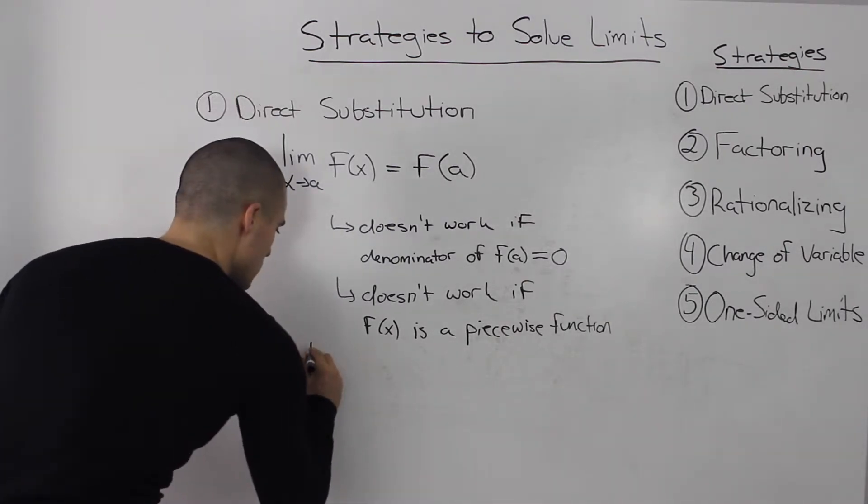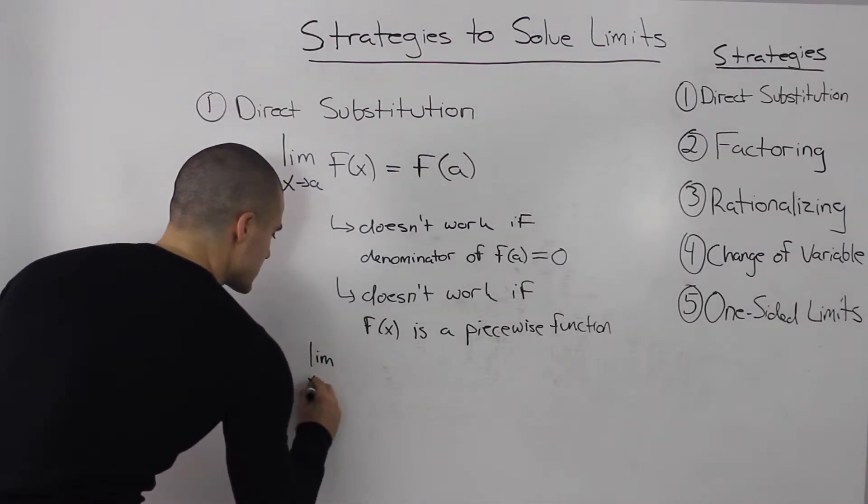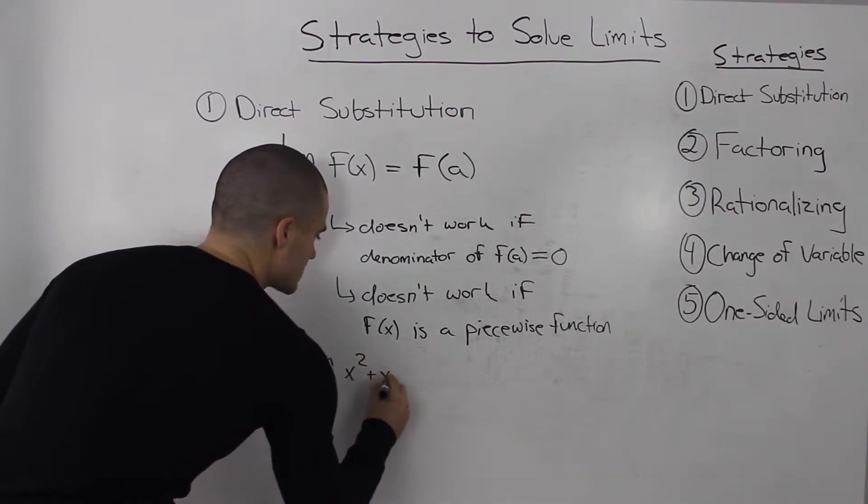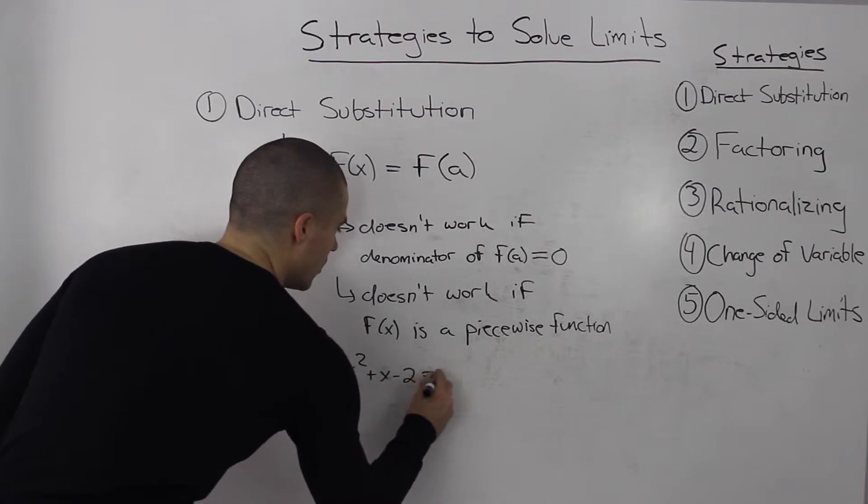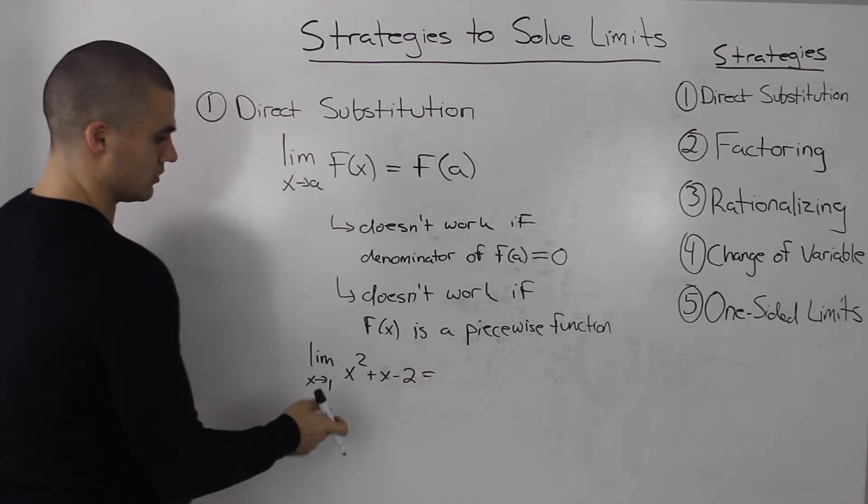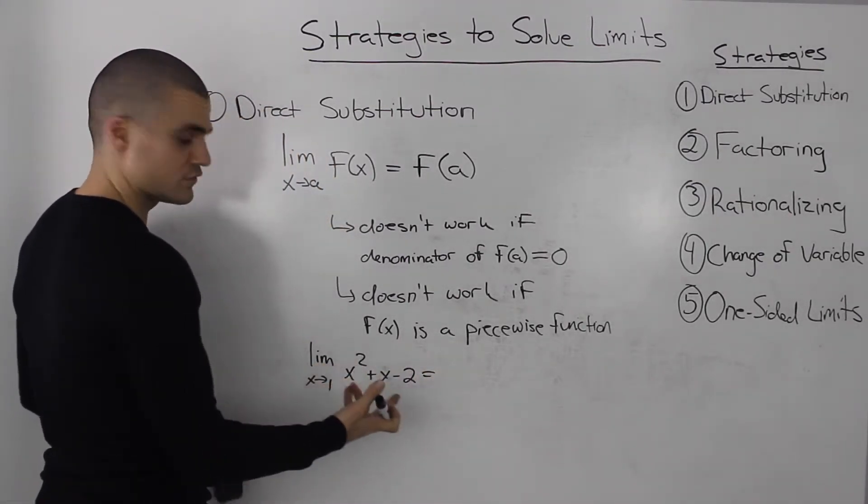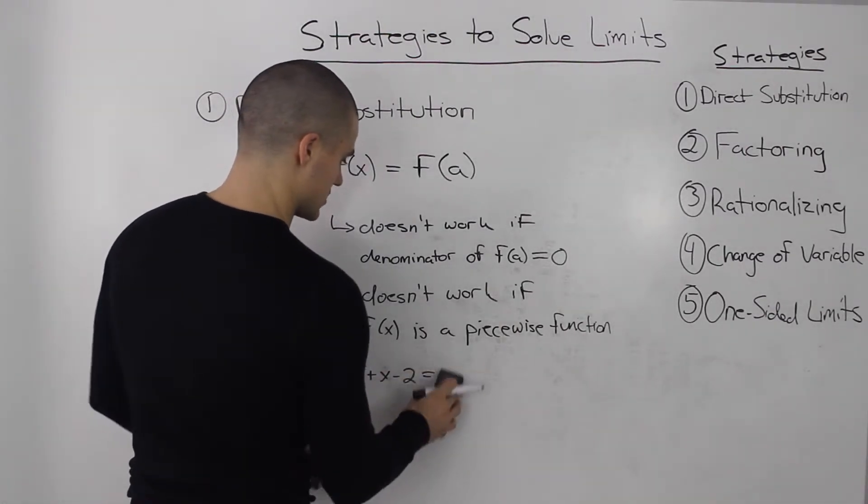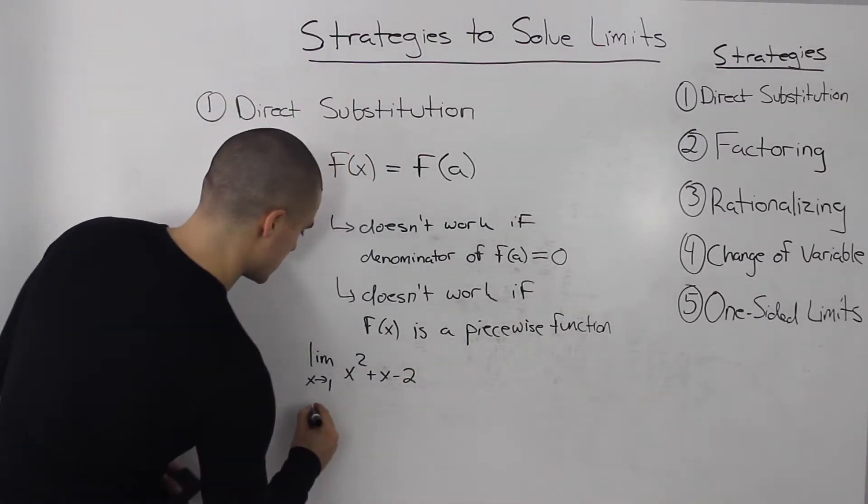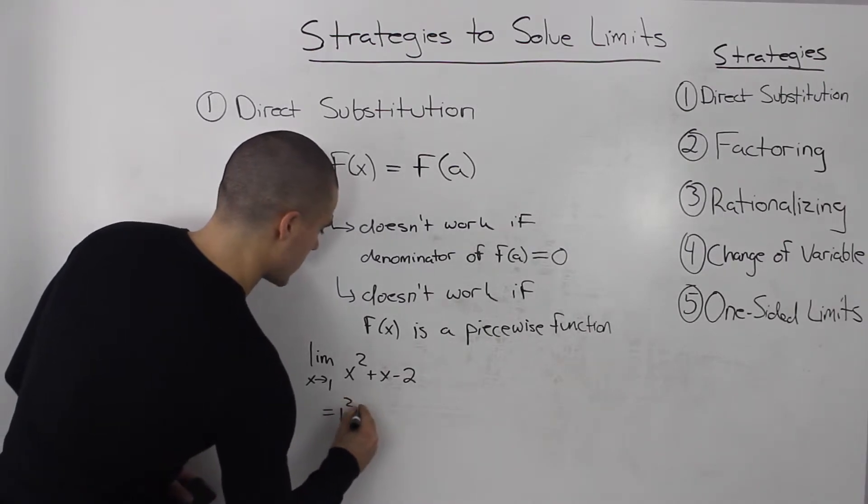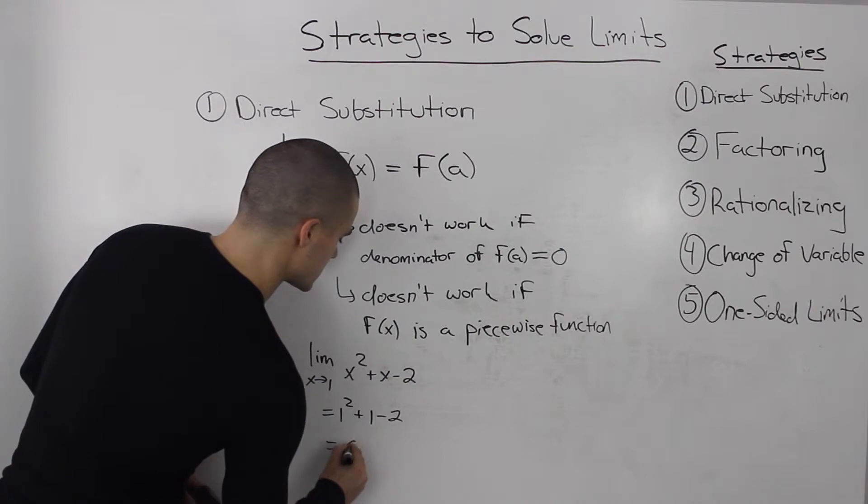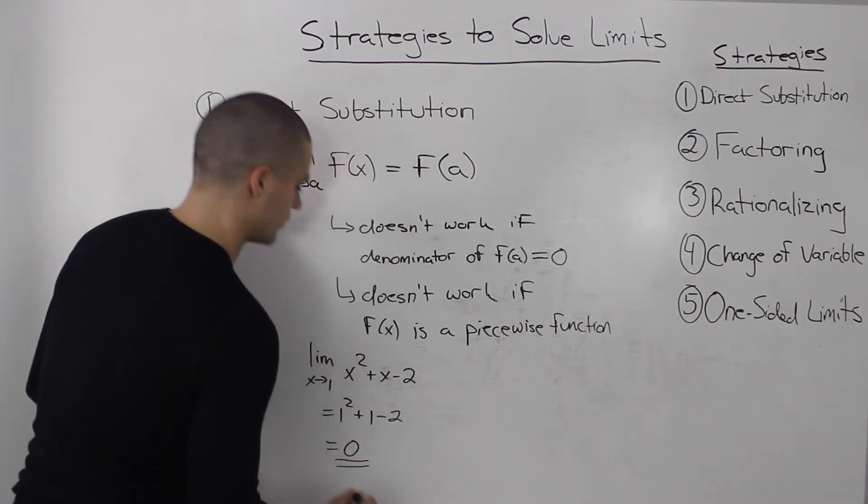Let's go over a couple examples. The limit as x goes to 1 of x² + x - 2. Well, this is a polynomial. If we plug in 1, it will be defined. So 1² + 1 - 2, that's just equal to 0. So the limit equals 0.